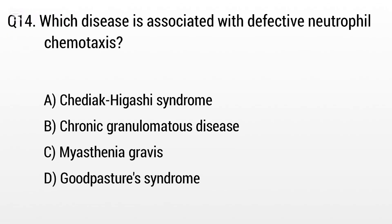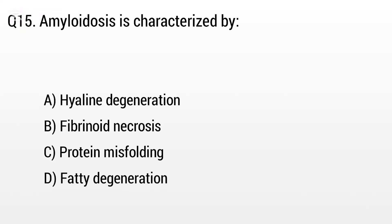Question 14. Which disease is associated with defective neutrophil chemotaxis? The right answer is Option A: Chediak-Higashi syndrome.